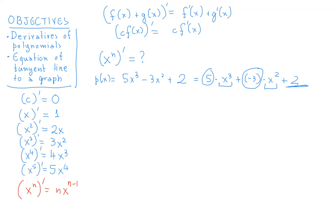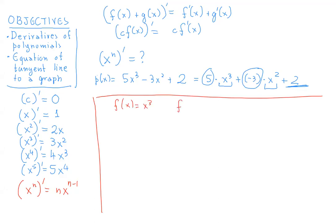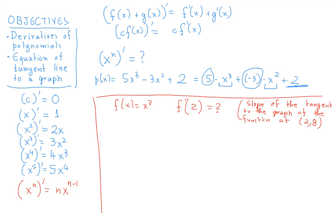For specific points: suppose f(x) = x³. What is the derivative at x = 2? That means what is the slope of the tangent to the graph at the point (2, 8)? The general formula gives f'(x) = 3x², so for the specific number, f'(2) = 3 times 2² = 12.